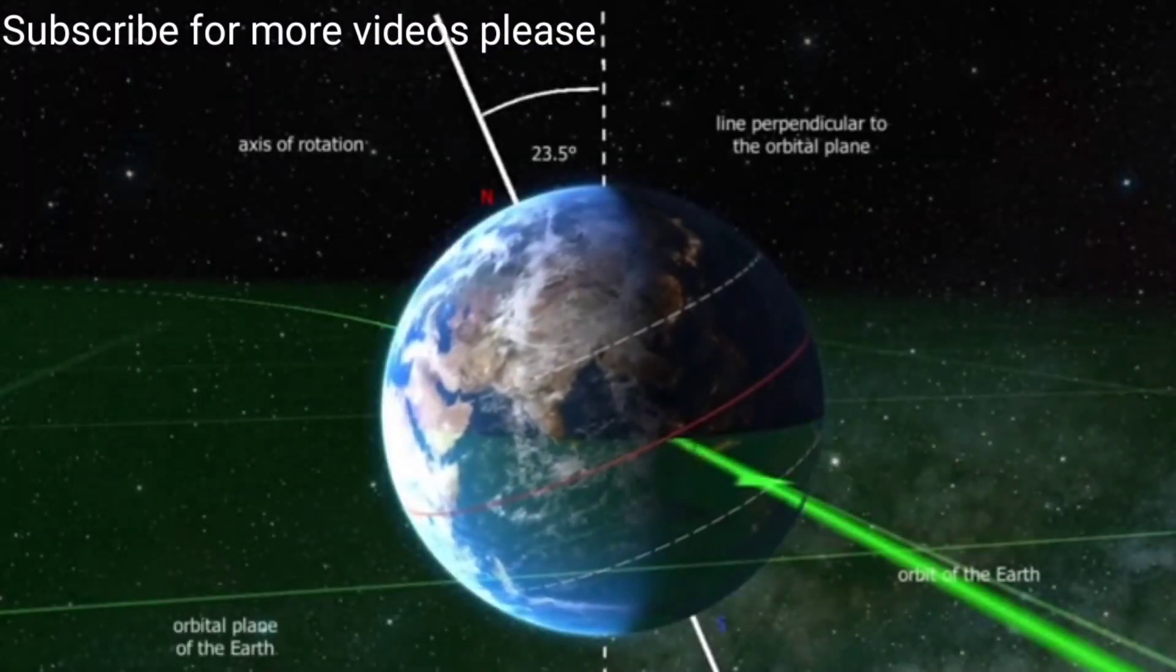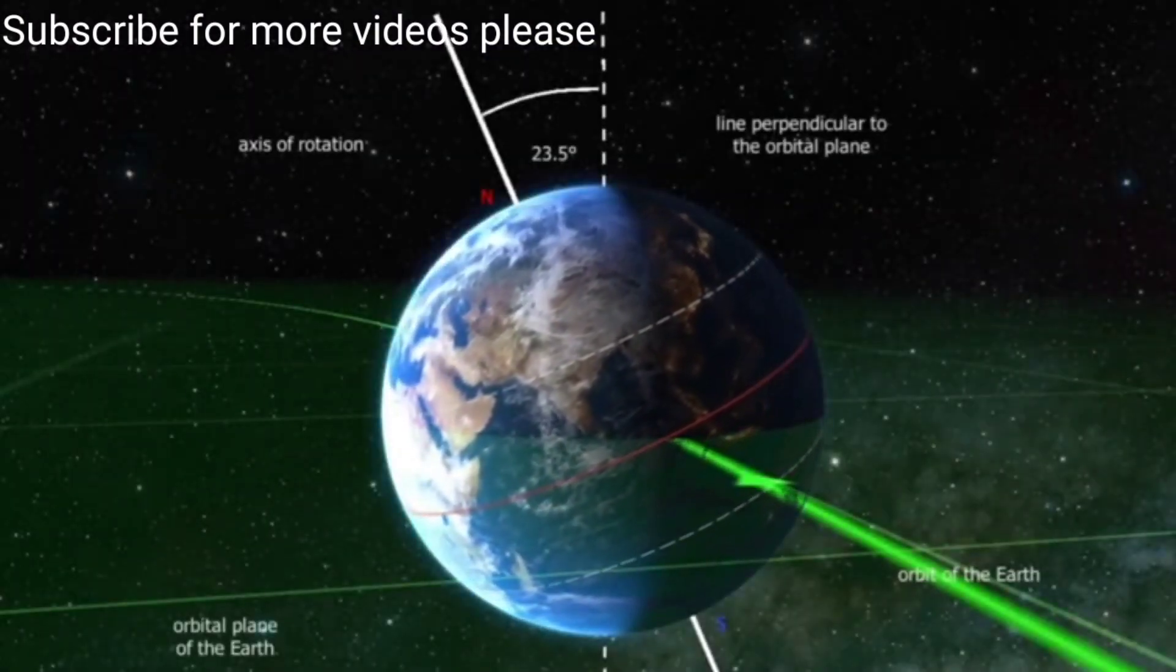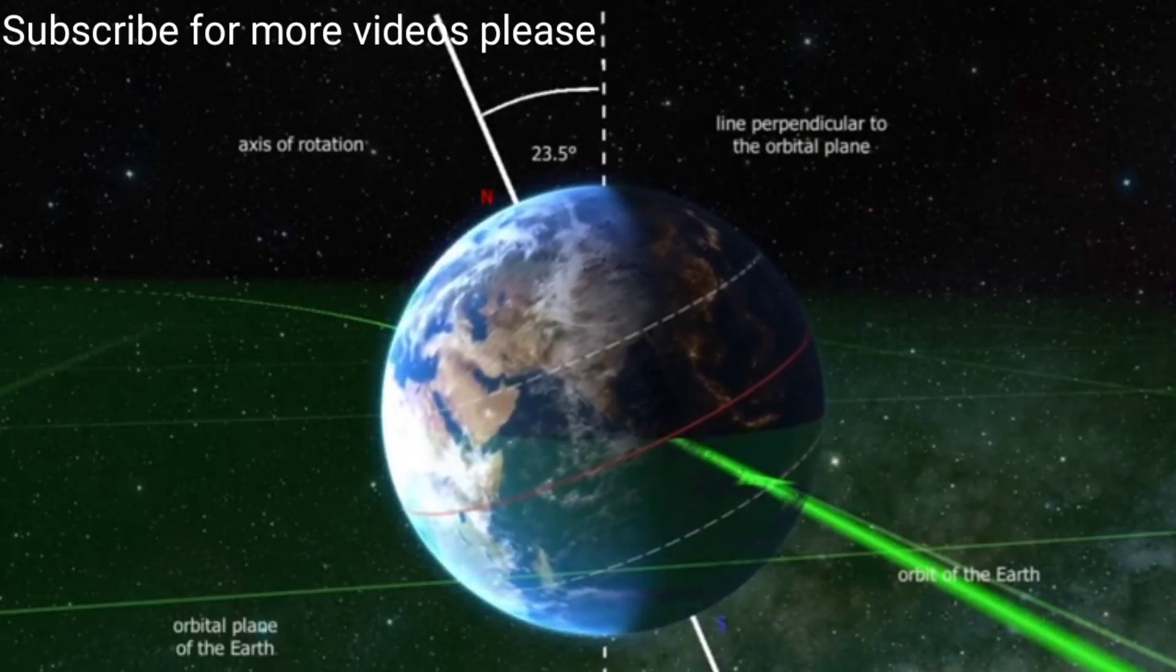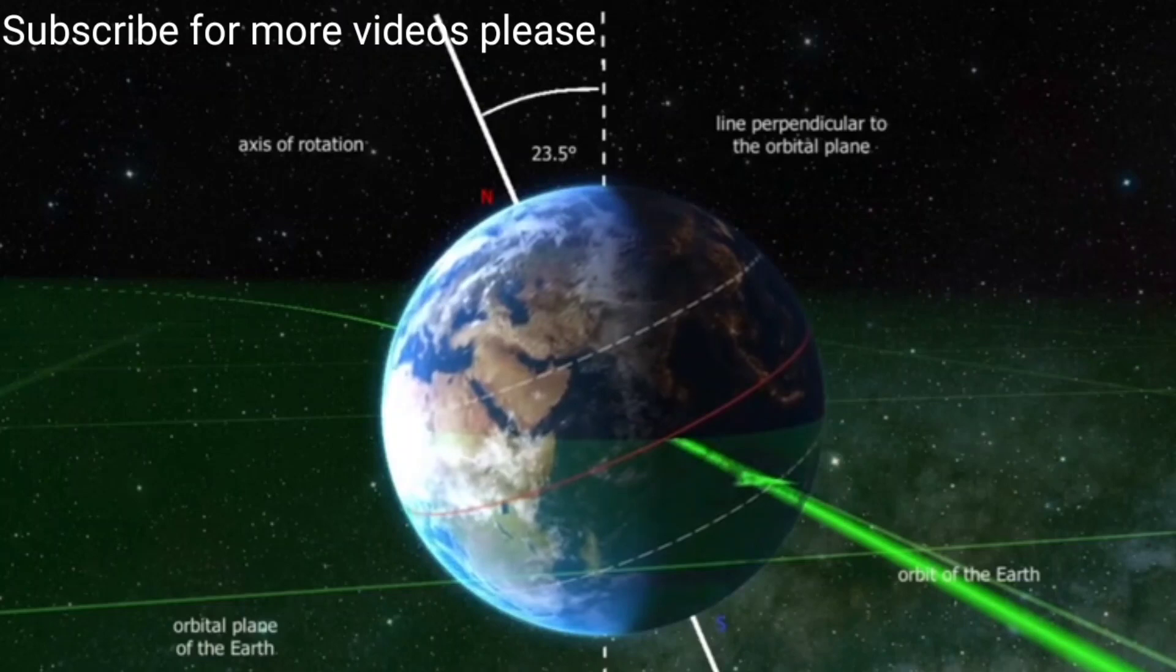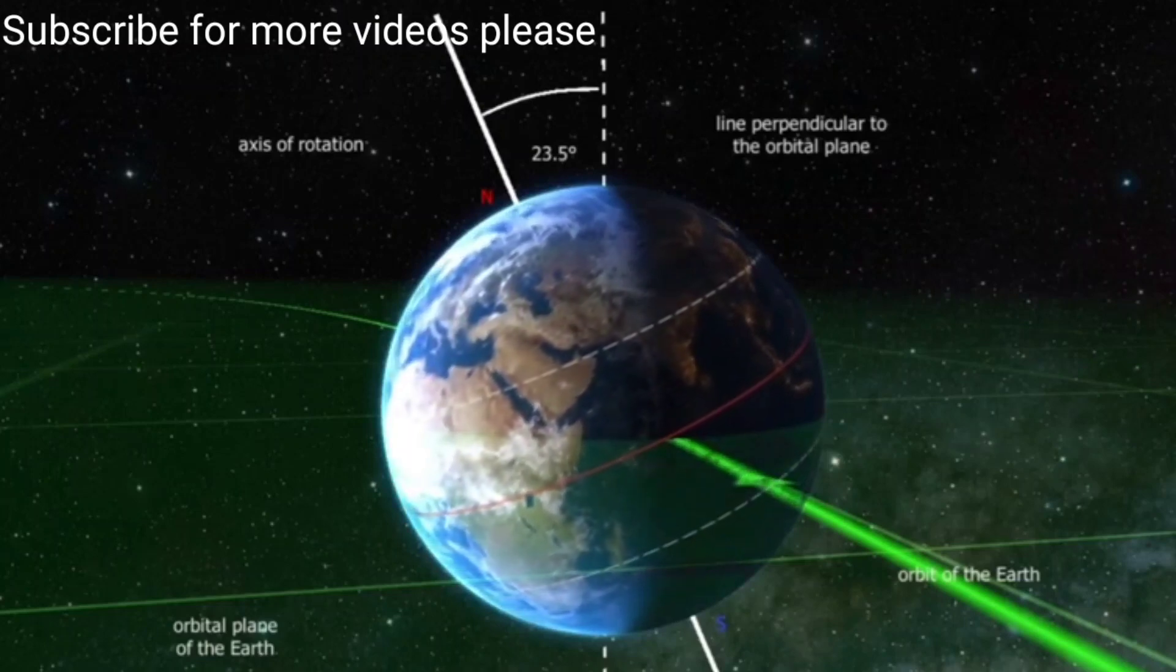The tilt of the Earth's axis is 23.5 degrees. As a result, within one year, the angle of incidence of sunlight changes at the same location, and this is the reason why seasons change.